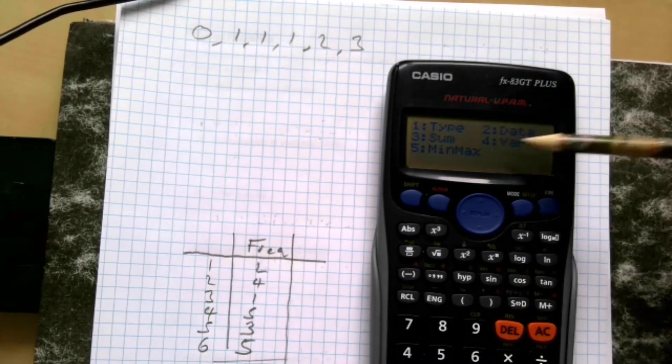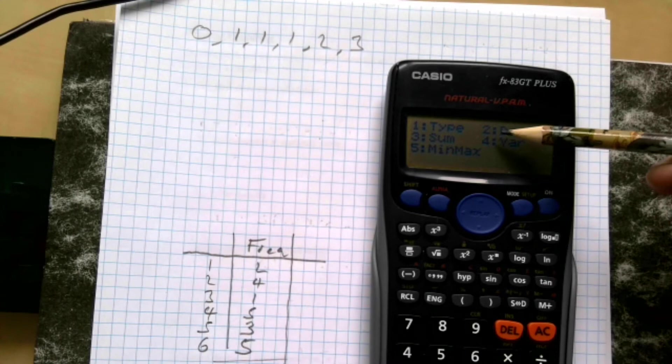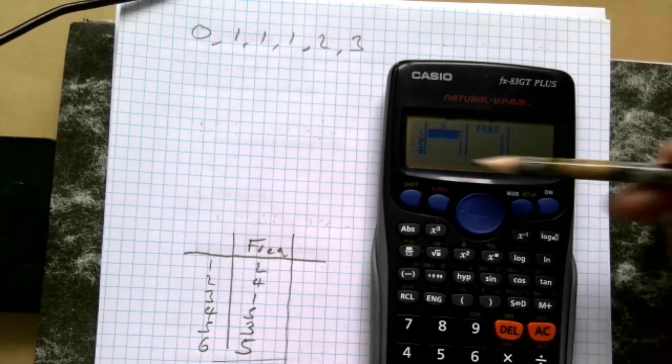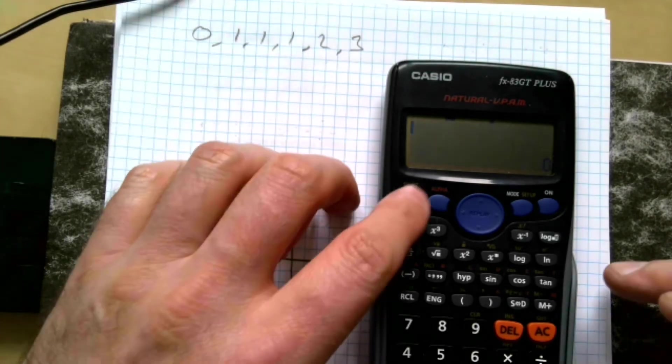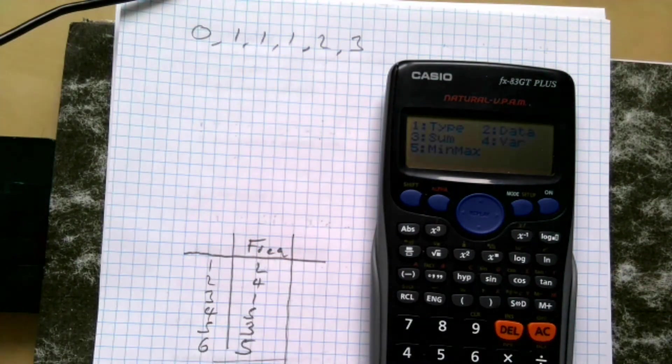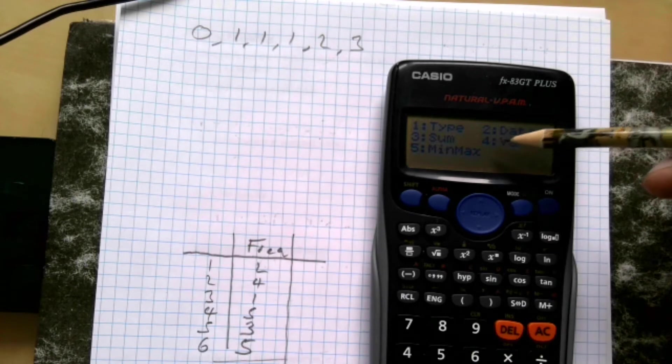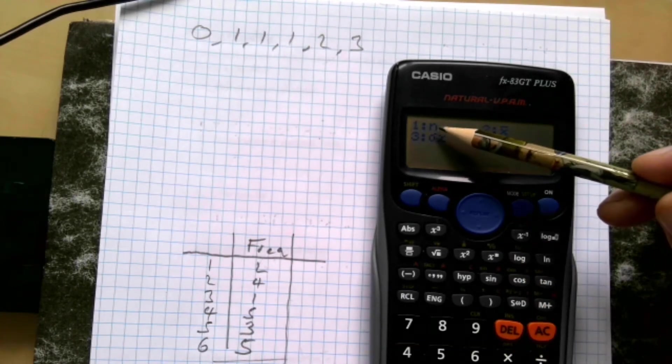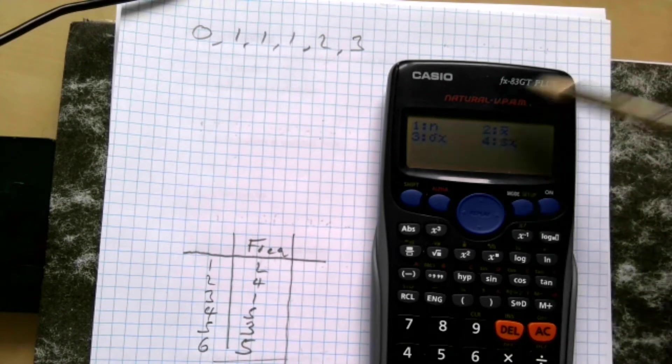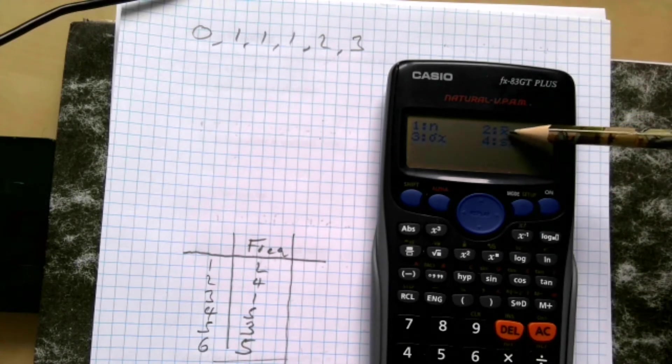The way we get all our information back then is we go shift and one, and then we can get all the data that we need. So if we hit number two, it brings us back to the original data that we've put in. Cancel out again. If we go shift and one, whatever it is we want, we can find it from here.